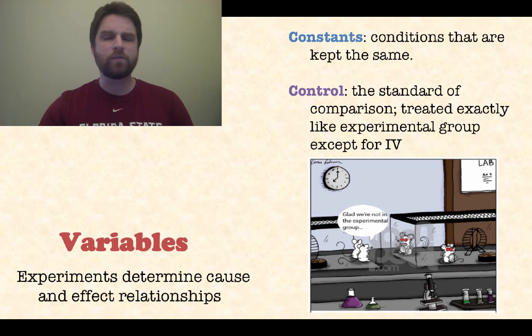Now, these aren't variables, but these are important to keep in mind. Constants are anything that are kept exactly the same when you run your experiment, like constant temperature when you're doing something with plant growth. There's also something known as a control group. This is a standard of comparison. This control group would be treated exactly the same as all the things in your experimental group except for the independent variable. You hold that independent variable constant for this control group.